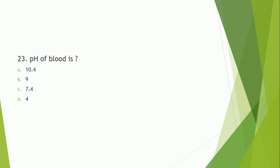Question number 23: What is the pH of blood? The correct answer is option C — the pH of blood is 7.4, which means it falls in the category of basic solution. A pH less than 7 is acidic and greater than 7 is basic.